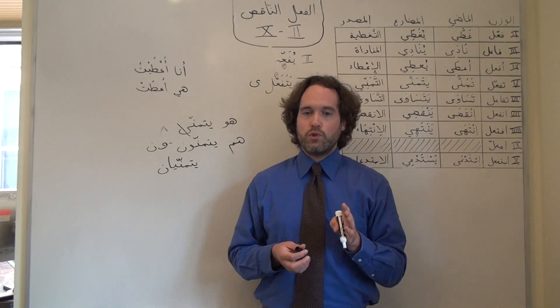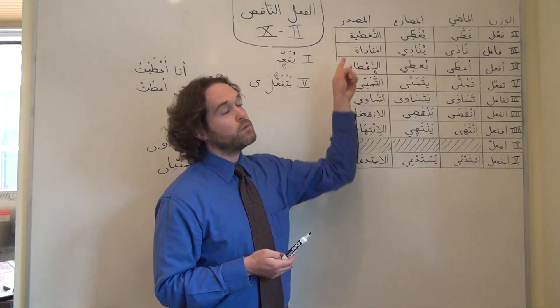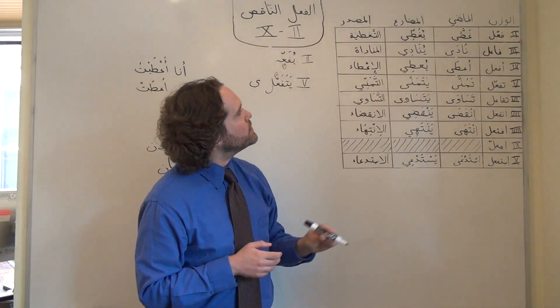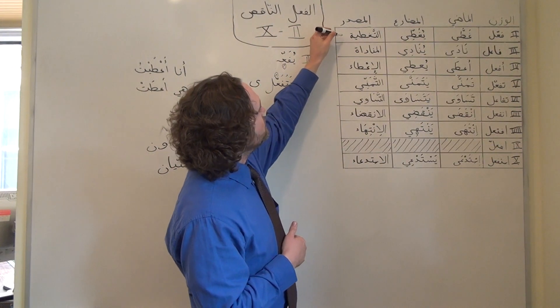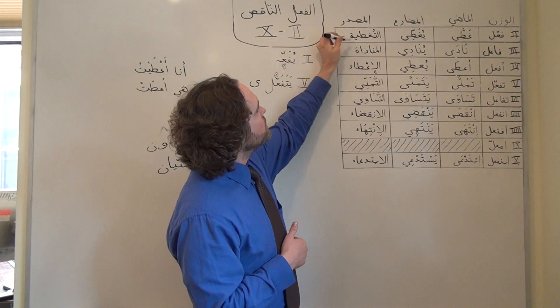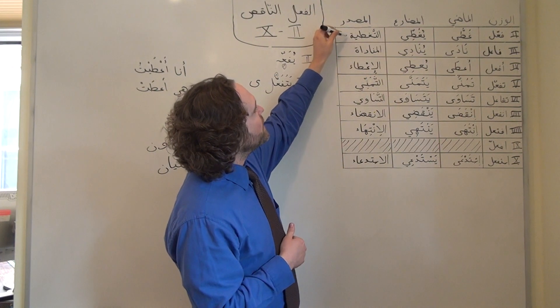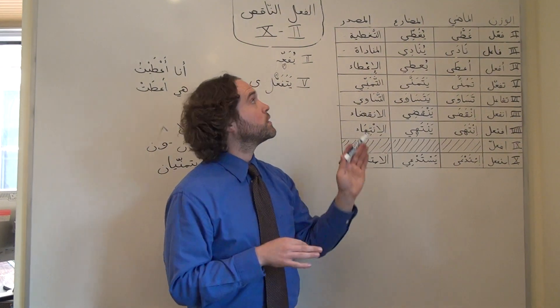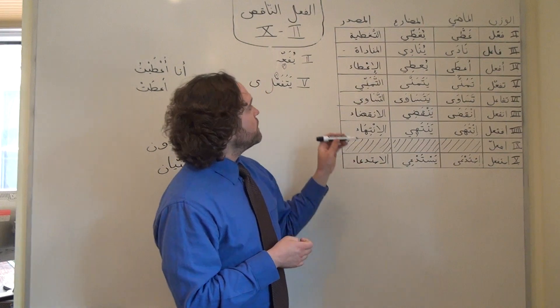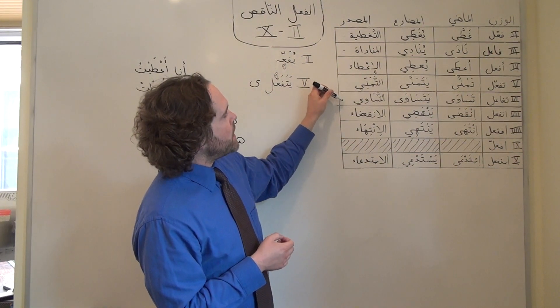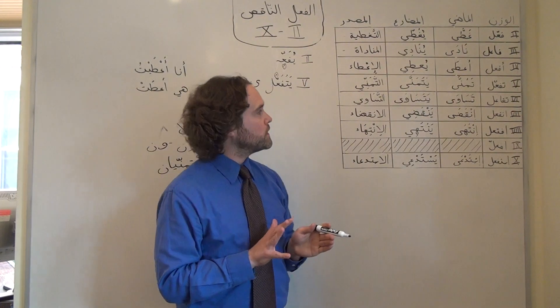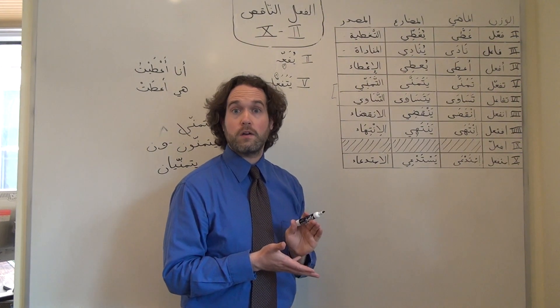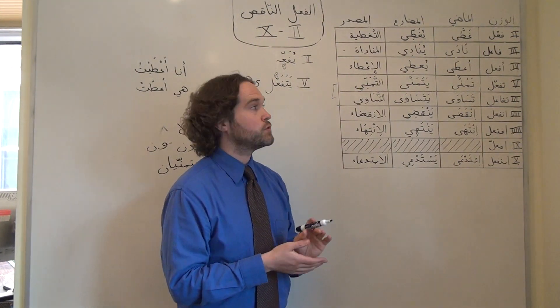The مصدر patterns are a little more unusual perhaps, but once we know one مصدر for one وزن, we're going to know how to construct the مصدر for that same وزن. As you can see here, the مصادر for forms two and three, التغطية والمناداة both have تاء مربوطة at the end, and that's going to be true for any other مصدر we construct for a فعل ناقص in those patterns. Forms five and six have a يا at the end of the pattern, that's a little bit irregular, but once again, we will know for any other five or six فعل ناقص that that is how we're going to construct the مصدر.